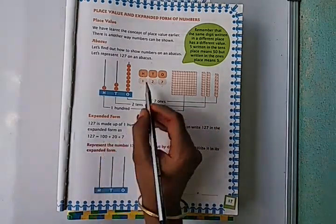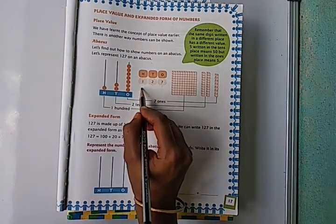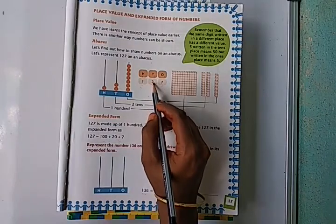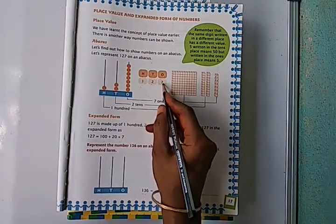Value of 1 in hundreds place is 100, plus 2 in tens place so the value of 2 is 20, and 7 is 7.